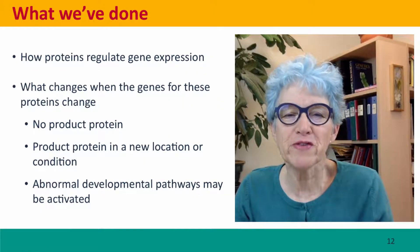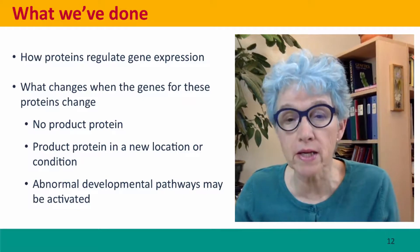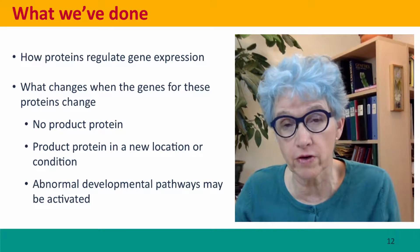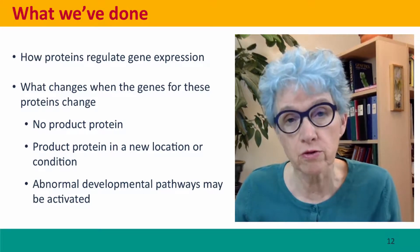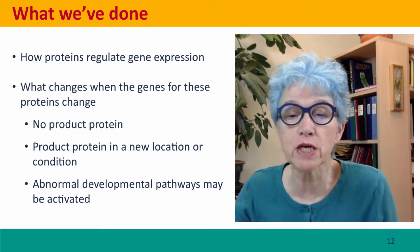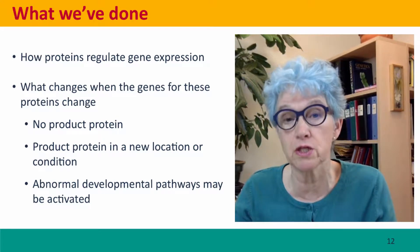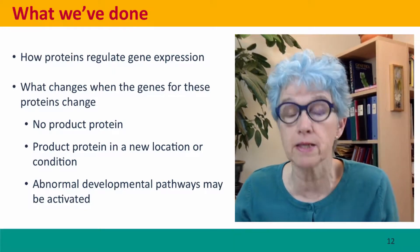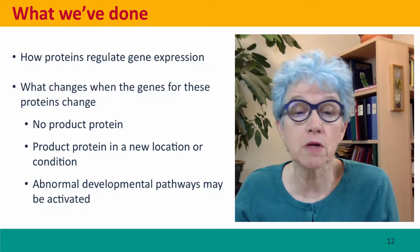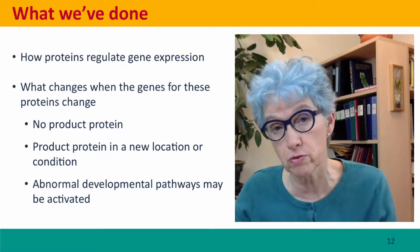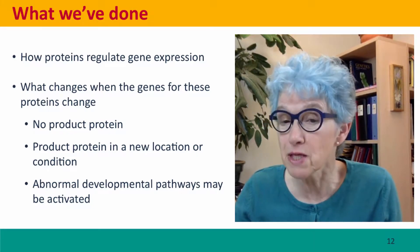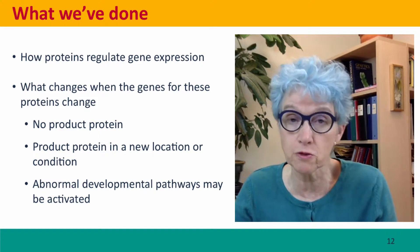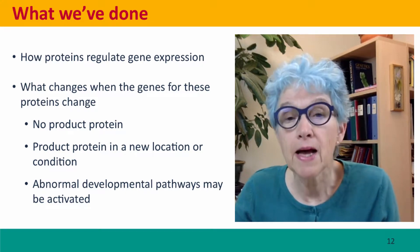So we've talked about how proteins regulate gene expression — that is, how they regulate the transcriptional activity of RNA polymerase by telling it when to use which promoters. And we talked about what changes when the genes for these proteins change. Sometimes there may be no production of the proteins that are regulated by these genes. Sometimes there'll be a protein product in a new location or a new condition. And sometimes abnormal developmental pathways may be activated — in the case of flowers, producing all sorts of beautiful flowers.